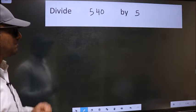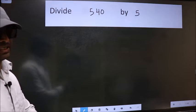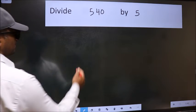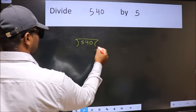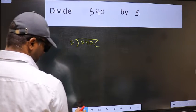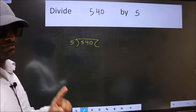Divide 540 by 5. To do this division, we should frame it in this way: 540 here and 5 here. This is your step 1.